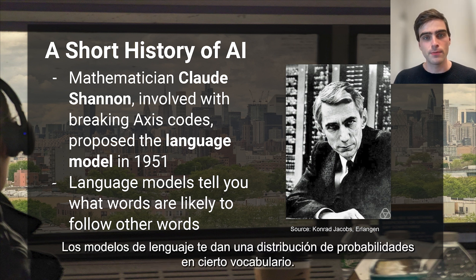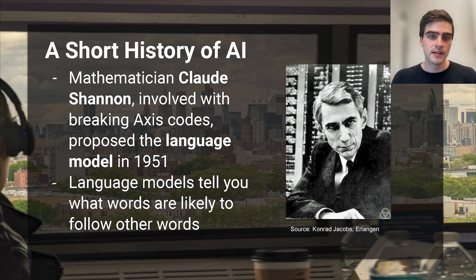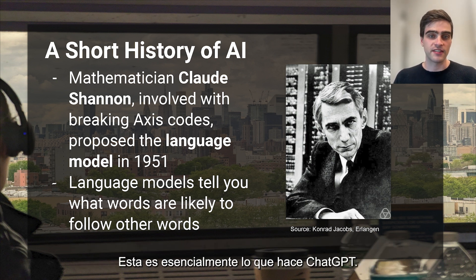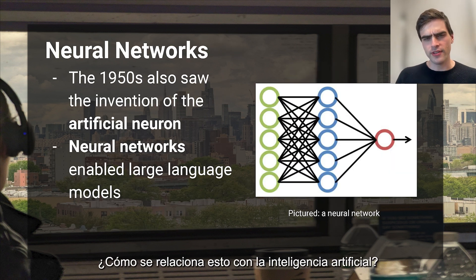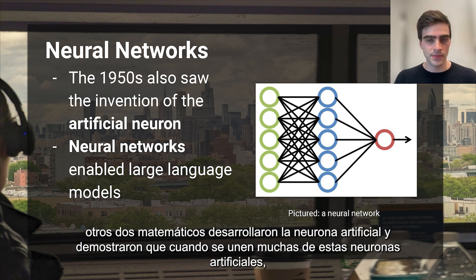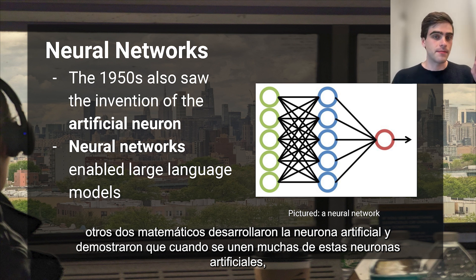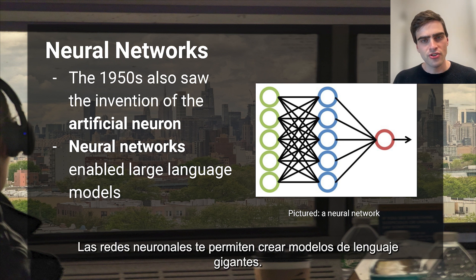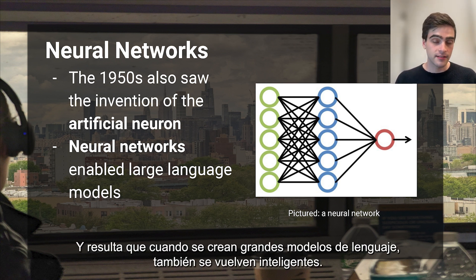He called this a language model. Language models give you a probability distribution over some vocabulary. Given some collection of words, the language model tells you how likely it is that those words appear in nature in conjunction. This is essentially what ChatGPT does. When Claude Shannon was developing the language model in 1951, two more mathematicians developed the artificial neuron. And they showed that when you string many of these artificial neurons together, you get a neural network capable of teaching itself to model sequences of words. Neural networks let you make giant language models and, as it turns out, when you make big language models, they become intelligent too.